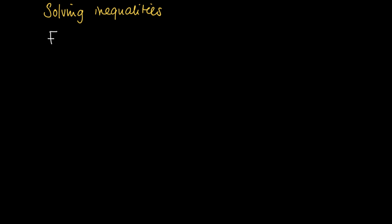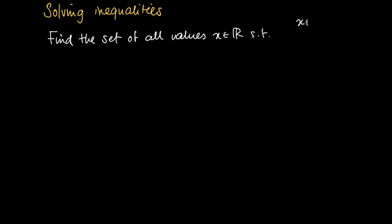In this clip I will show you how you can solve an inequality where on one side you have a rational function and the other side you have zero. The problem under consideration is: find the set of all values x in R such that (x+1)(x-2) divided by (x-1)(x+2) is greater than or equal to 0.